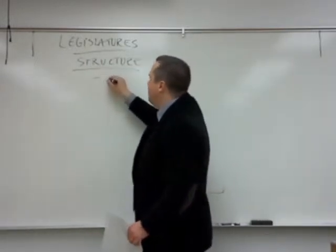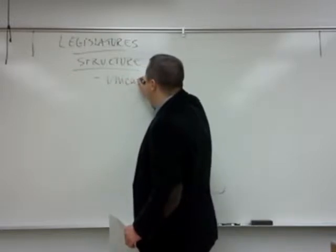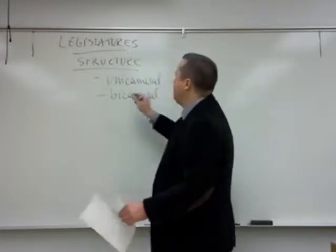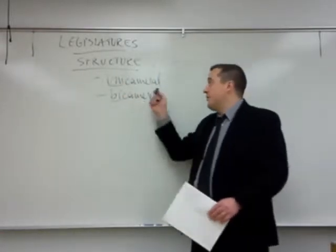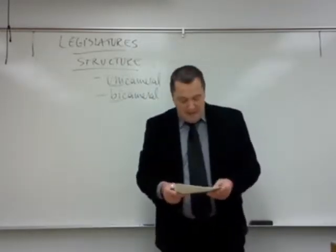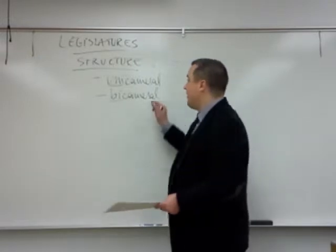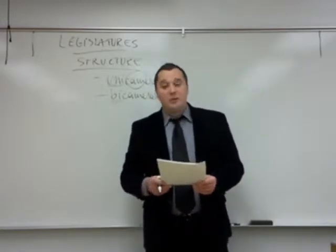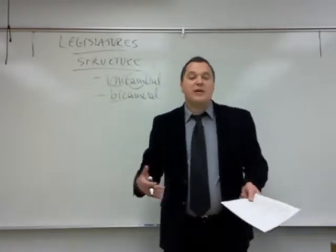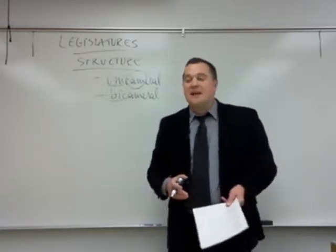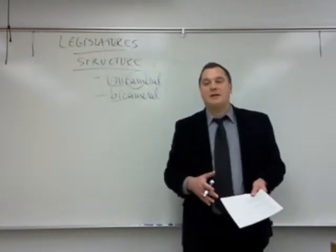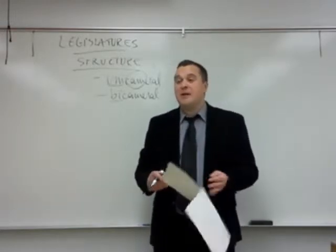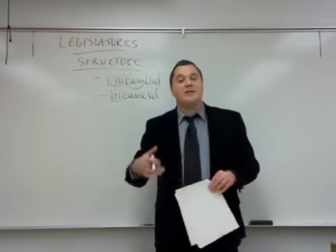They can be unicameral or bicameral. Unicameral means one chamber, bicameral means two chambers — 'cameral' means chambers, or houses. In fact, most often than not they are unicameral: about 63% of the states around the world have unicameral legislatures. The advantage of a unicameral legislature is that there are fewer people you pay to represent you. It works well for smaller or more homogenous countries. The disadvantage is that one house can pass anything without a check — it can make a mistake.